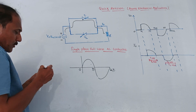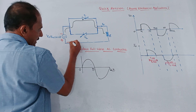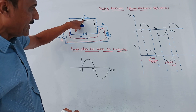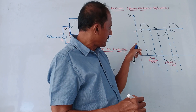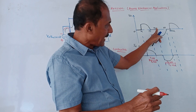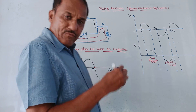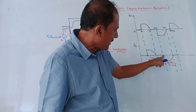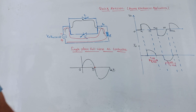During the negative half cycle, the polarity gets reversed — this terminal becomes minus and this becomes plus. Due to this, T2 is turned on and T1 is turned off. During positive half cycle, from alpha to pi, T1 is on and T2 is off. During the negative half cycle, from pi plus alpha till 2π, T2 is on and T1 is off. This is how the single phase full wave AC controller works.